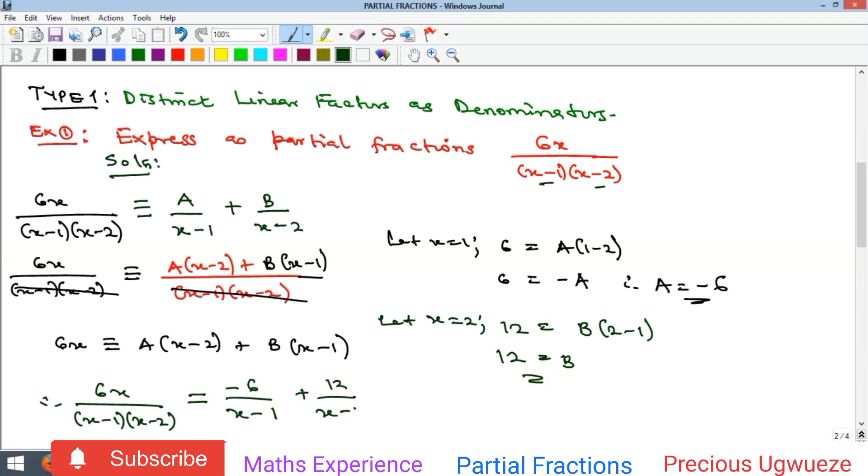Making the one that is positive come first, which is 12 over (x minus 2) minus 6 over (x minus 1). That is the required partial fractions.